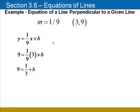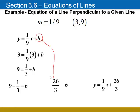So, to solve this equation for b, we need to subtract 1 third from both sides, and 9 minus 1 third, after you get a common denominator, is 26 thirds. That value goes back in for b, and it will be y equals 1 ninth x plus this value of b, 26 thirds.